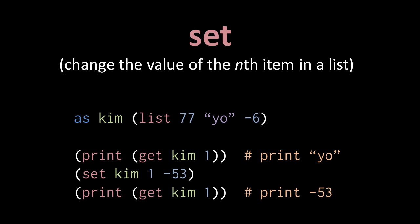Here, the list assigned to Kim starts off with three values: 77, Yo, and 6. So when we first print the value returned by get Kim 1, the second item in the list, Yo, is printed.